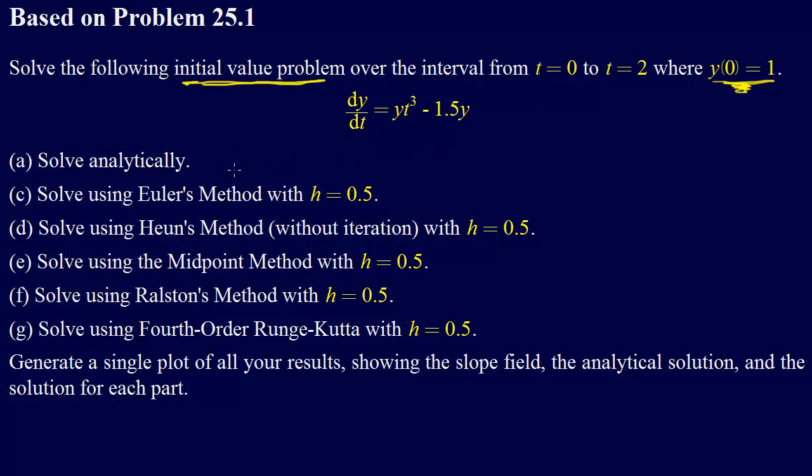And then we're supposed to solve it analytically, using Euler's method, using Heun's method. So I looked up the pronunciation, so this guy's name was Carl Heun, which is a German name, and so you say it Heun's method. So it rhymes with coin.